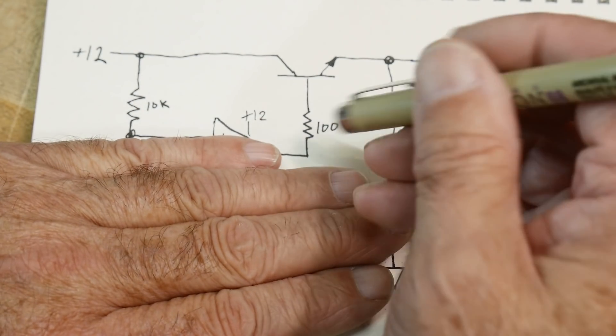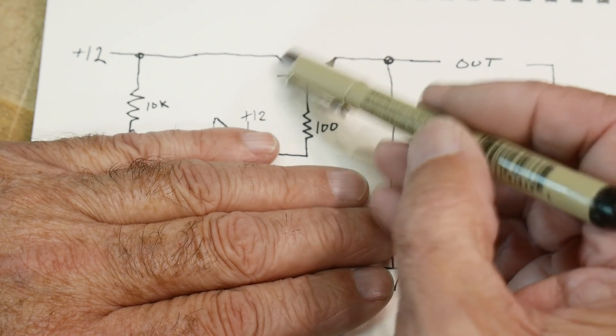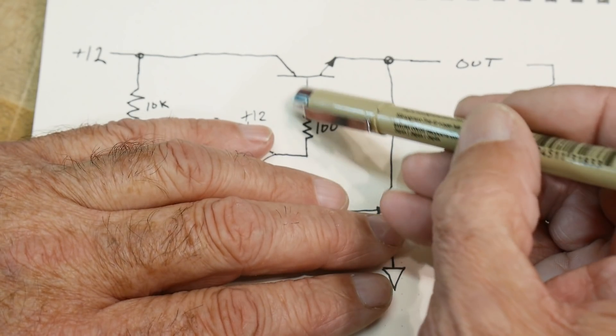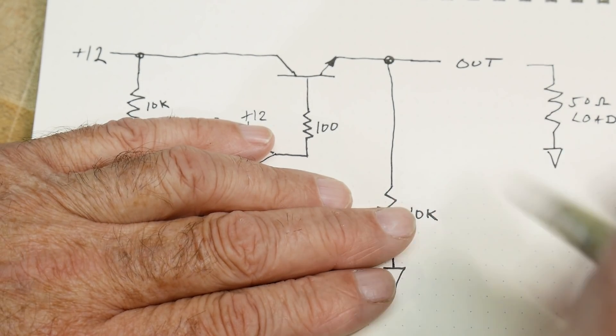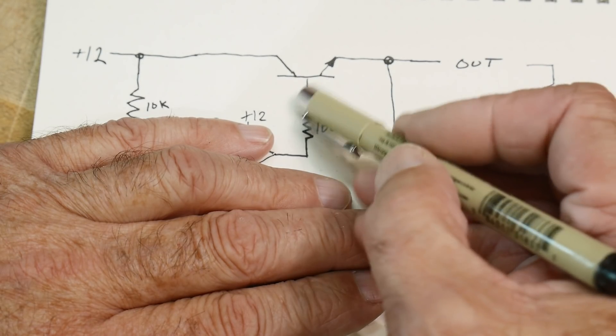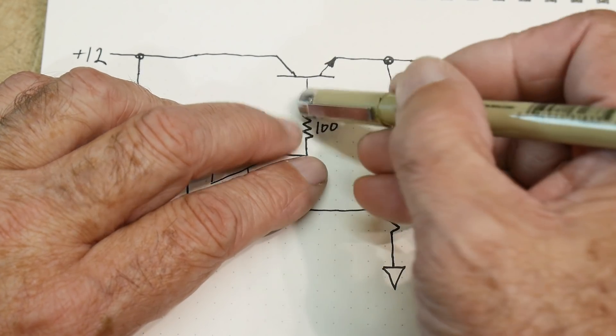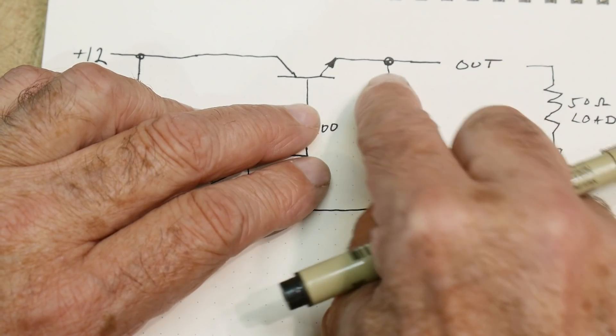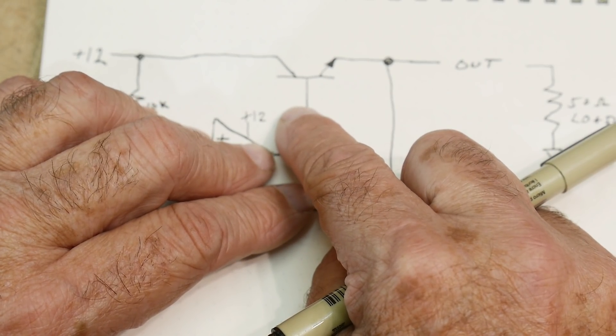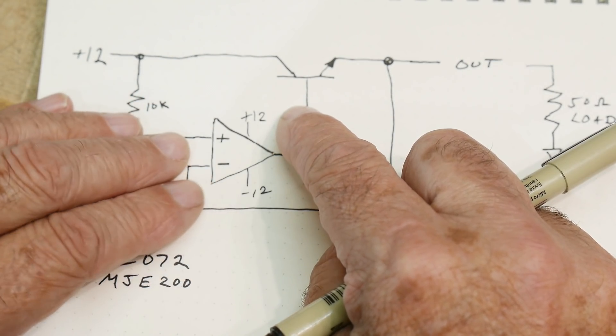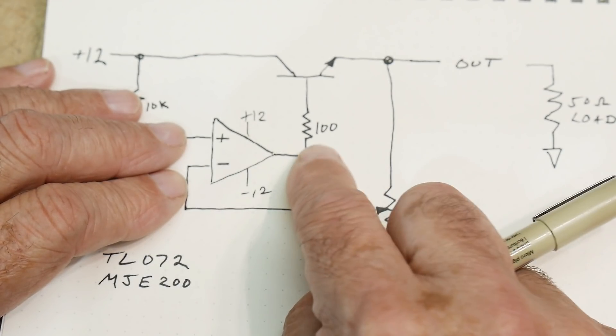We'll put a base resistor on the transistor so we don't blow it up—any current through here will be limited by 100 ohms. We're going to drive this voltage here and it will be an emitter follower. Whatever voltage we put here, there will be a diode drop and that voltage will be here. If we want 5 volts here, we need about 5.7 volts here, and we're going to generate that 5.7 volts with this op amp.